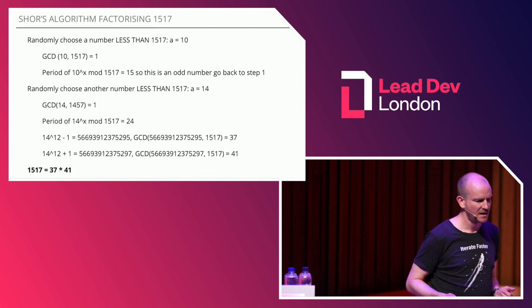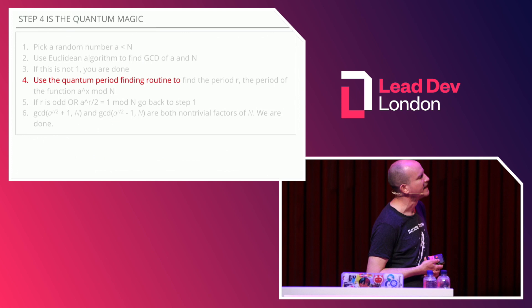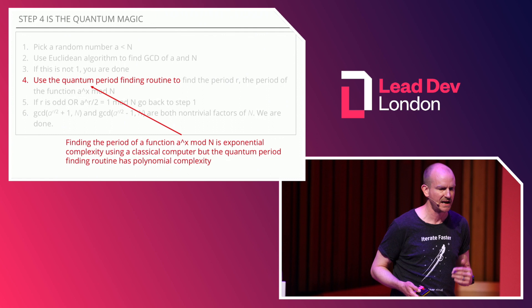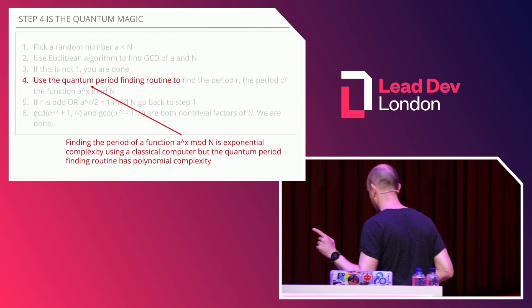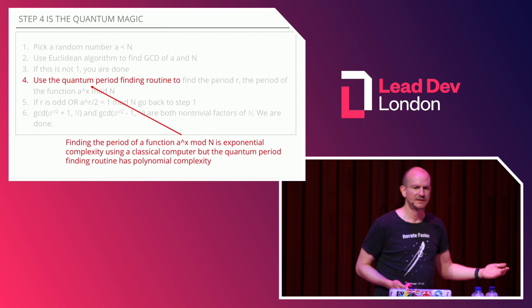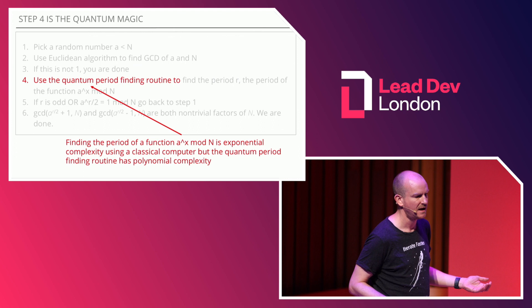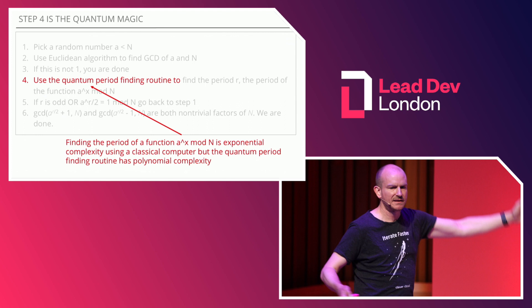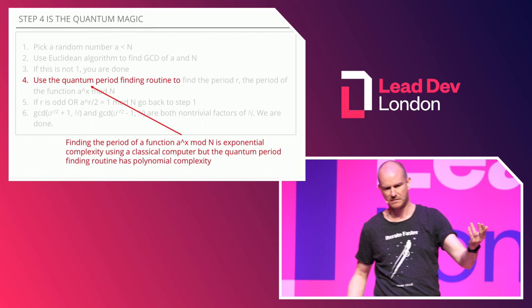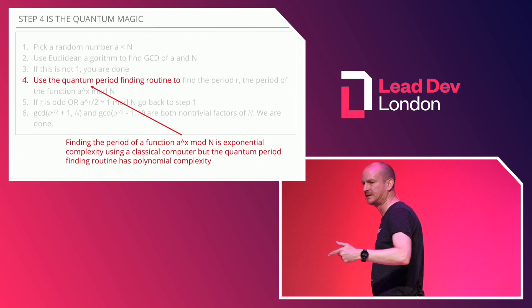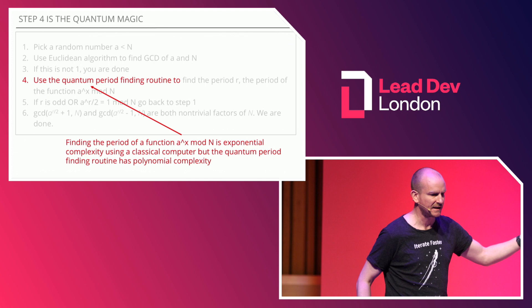Why am I telling you all this? Because step number four is to use the quantum period-finding routine. If you construct a classical computer using every electron in the universe as a bit, it will take that theoretical computer longer than the lifetime of the universe to factor a 3,000-bit key. We're quite confident that RSA is safe from attack by any theoretical classical computer. However, all we care about is the periodicity of that function — not the individual numbers.